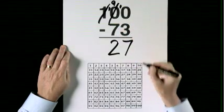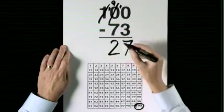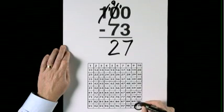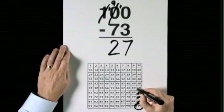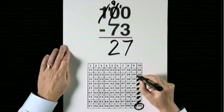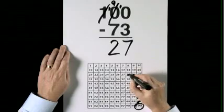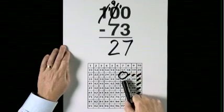100 subtract 73: take 10, take 20, take 30, take 40, take 50, take 60, take 70. 1, 2, 3. 27.